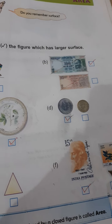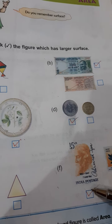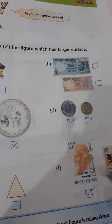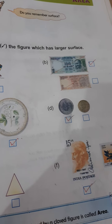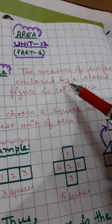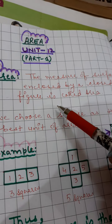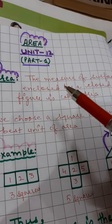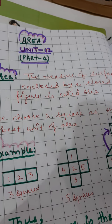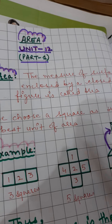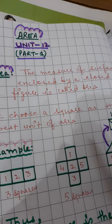Among these two postal stamps, this is bigger so it will cover a larger surface. So students, from this we come to know what is area. The measure of the surface enclosed by the closed figure is called area. This larger surface which these objects are covering, which these objects are enclosing, is called its area.